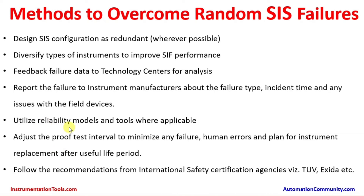Additional methods include utilizing reliability models and tools where applicable, and adjusting the proof test interval to minimize failures and human errors. Plants should plan for instrument replacement after the useful life period. Some plants perform maintenance at regular intervals and replace components such as o-rings during major turnarounds, while others may skip this due to time or economic limitations — which increases the chances of equipment or valve failure.